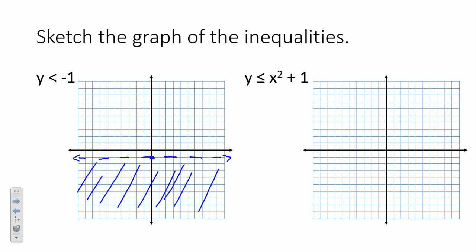We have an equals here so we can make a solid parabola. I'm going to start out at my vertex of (0, 1) — this is x minus 0 squared plus 1. When I'm one point to the right, since a is 1, I'm 1 up. Two steps away from the vertex I'll be 4 up — 2 squared is 4. Three steps away, 3 squared is 9. So I have my parabola, solid because of the equal to.